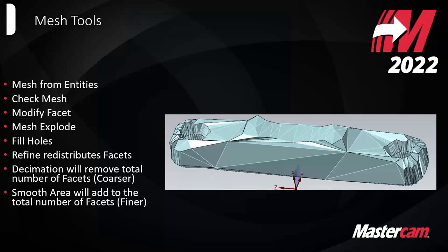For users familiar with similar mesh tools outside of Mastercam, a lot of the terminology should be the same — decimation, smooth area. Essentially, when you refine a mesh you're changing the triangle distribution. Decimation makes it rougher, while smooth area makes it smoother by adding more triangles, so radii will theoretically be a little smoother. The terminology is supposed to be very similar to what other mesh software tools use.